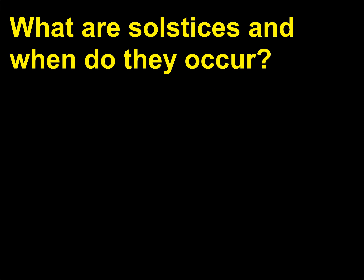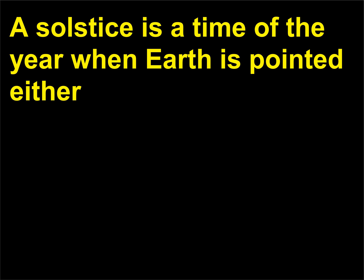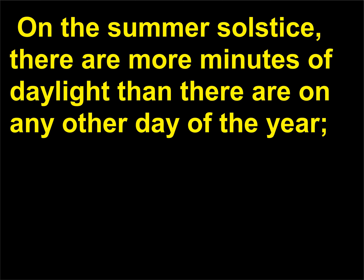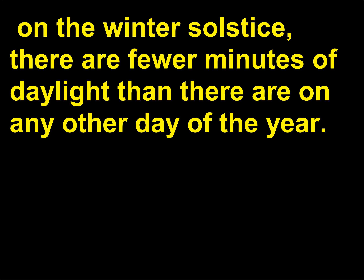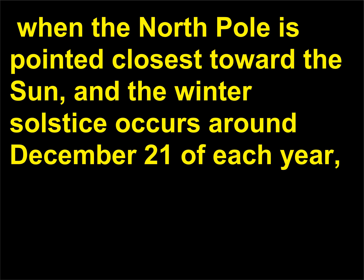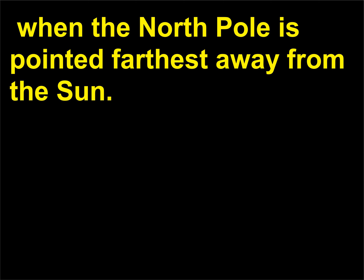What are solstices and when do they occur? A solstice is a time of the year when Earth is pointed either closest toward the sun or farthest away from it. On the summer solstice, there are more minutes of daylight than on any other day of the year. On the winter solstice, there are fewer minutes of daylight than on any other day. In the northern hemisphere, the summer solstice occurs around June 21st, when the North Pole is pointed closest toward the sun, and the winter solstice occurs around December 21st, when the North Pole is pointed farthest away from the sun.